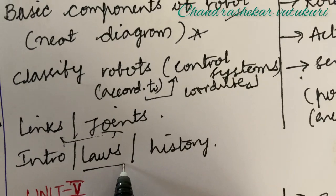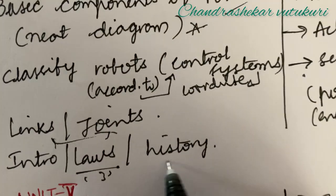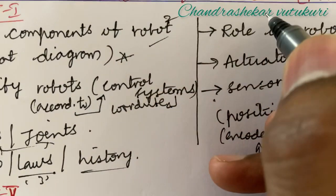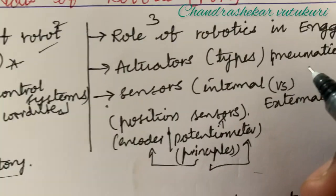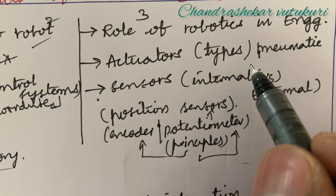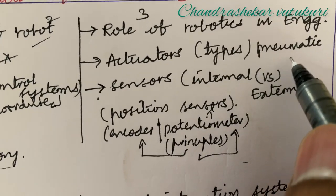The links and joints and their difference, a bit of intro of robot is important for the short question, and there are three laws of robots and certain history may also be asked in the short as well as long questions in part two. And the role of robotics in engineering and in different applications.